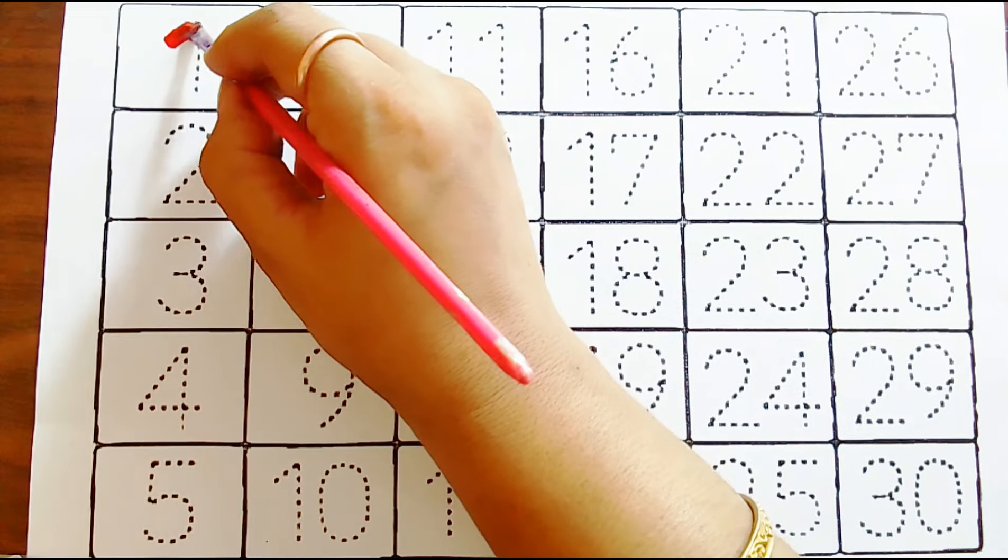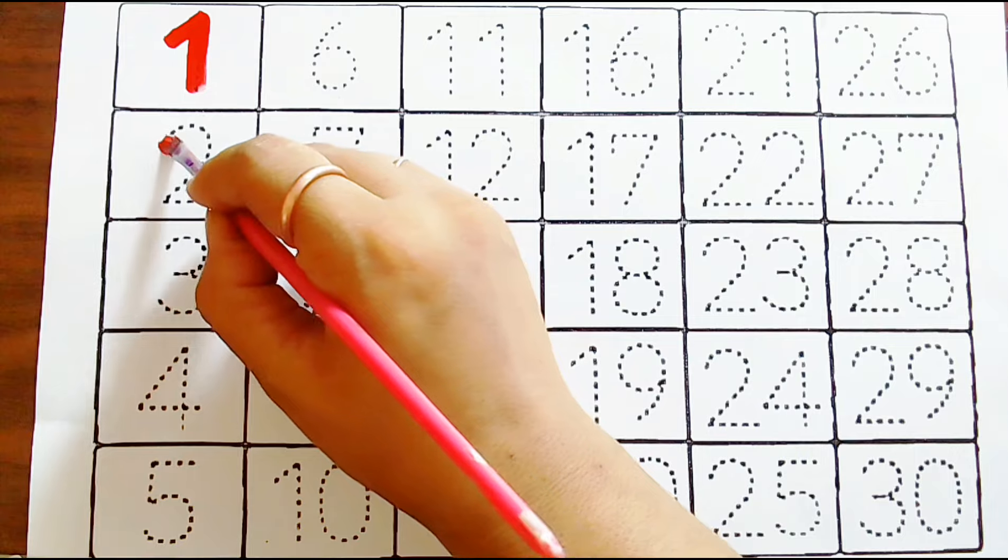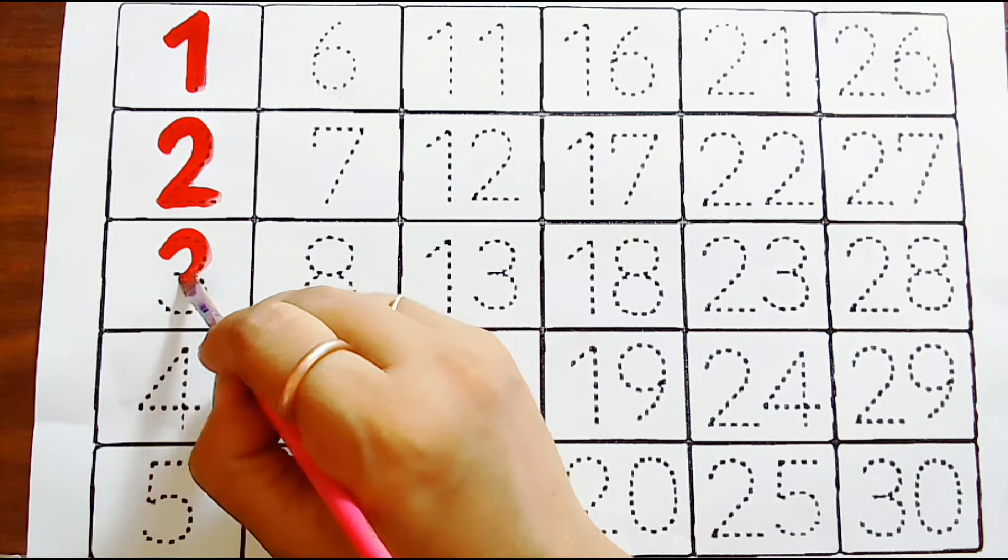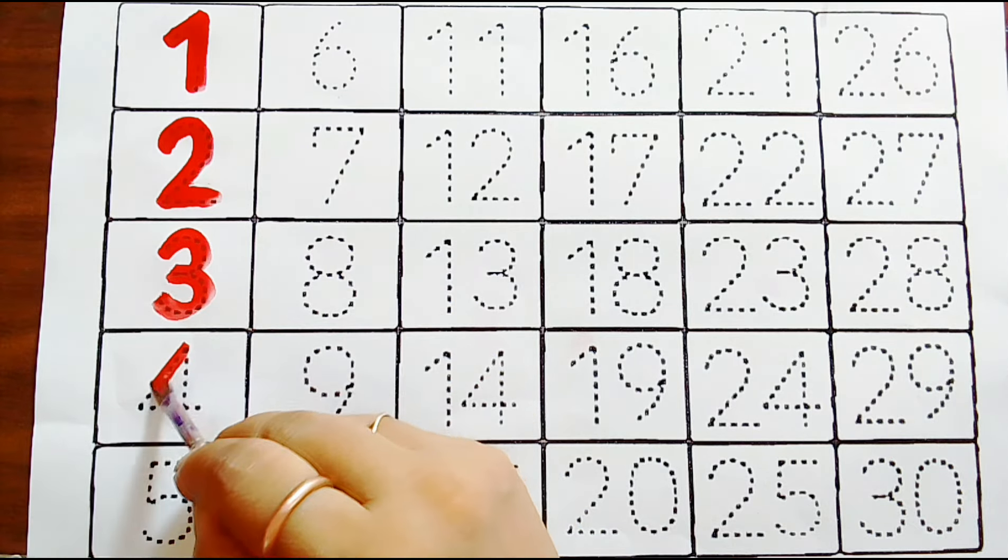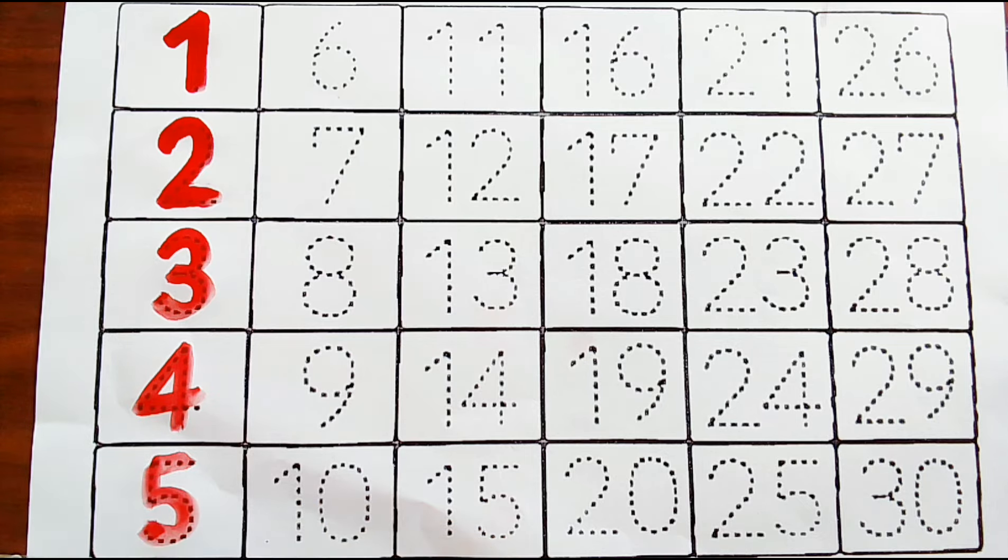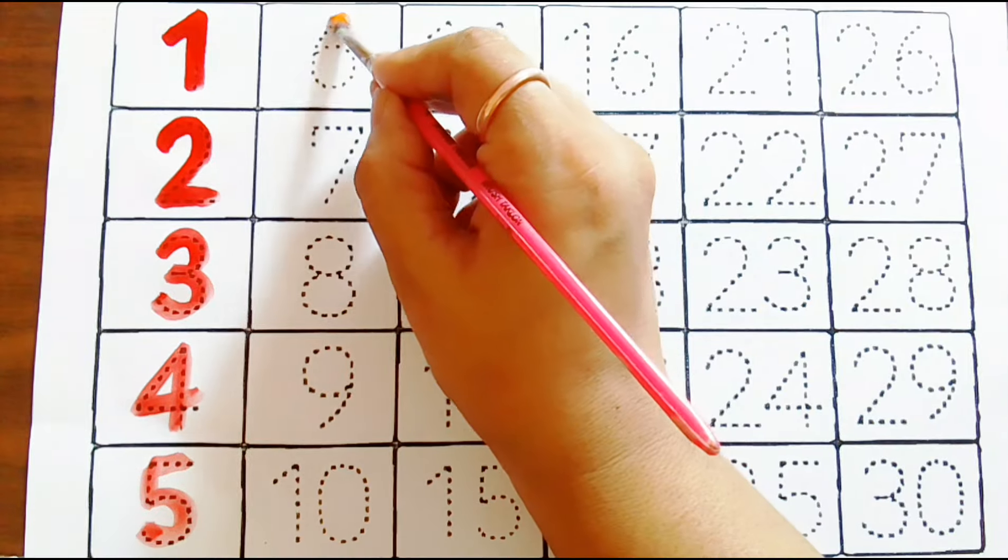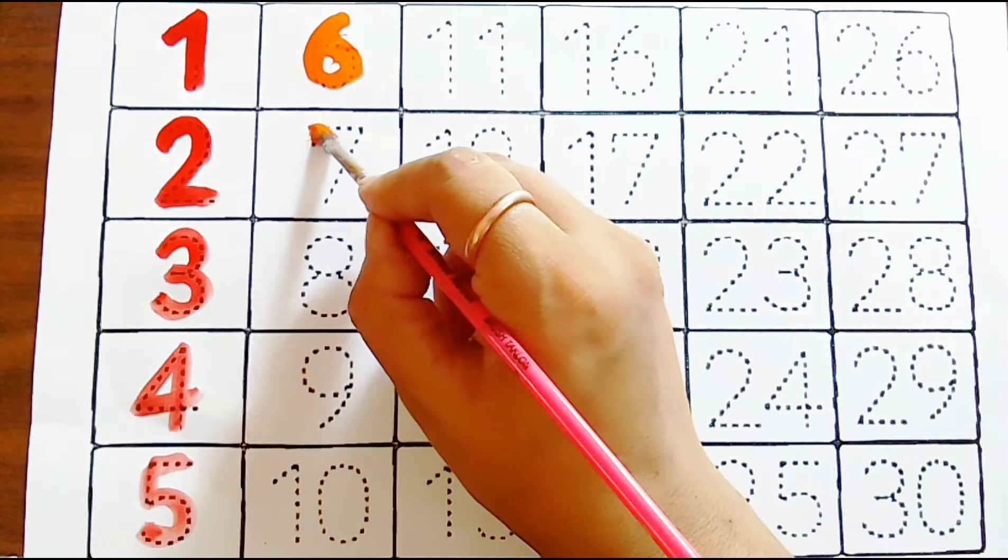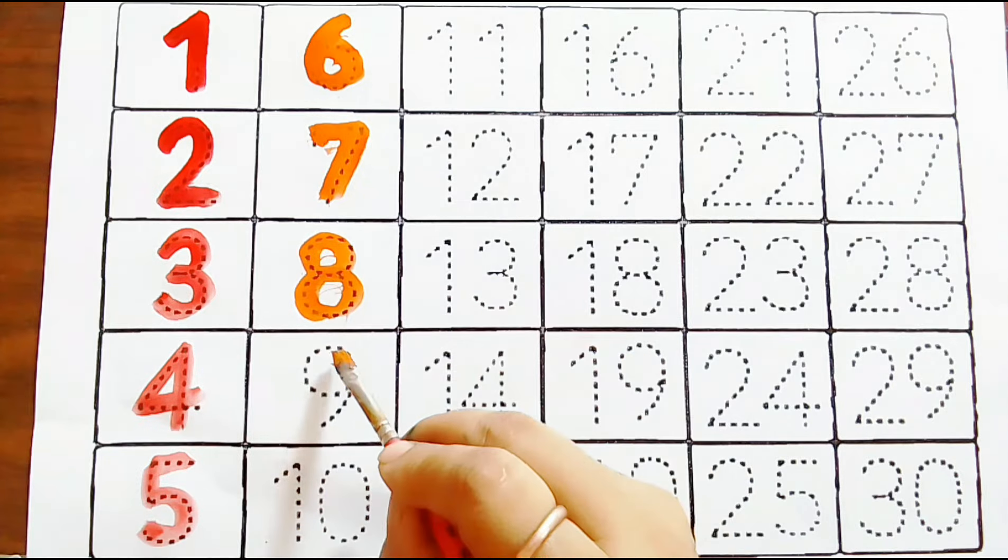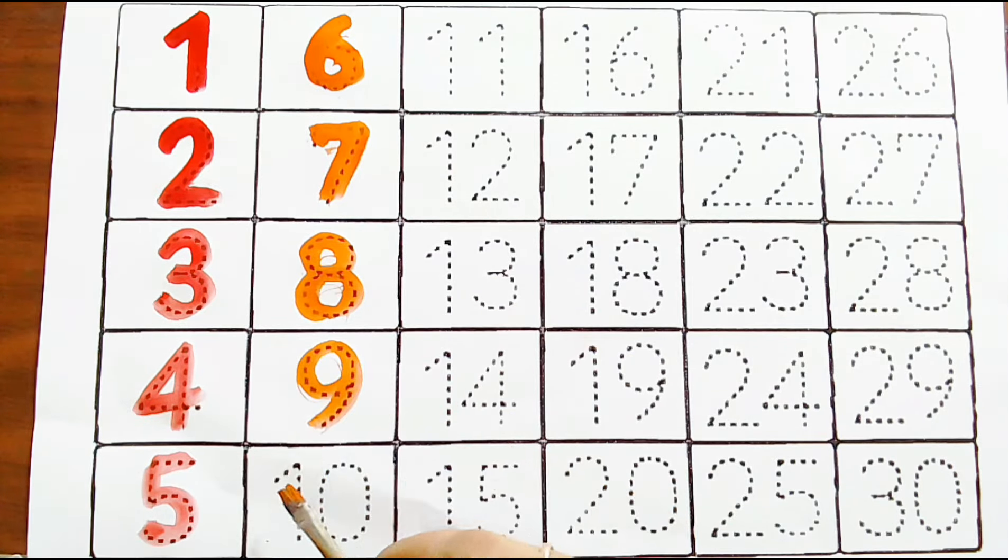Numbers. Red color: one, two, red color three, four, five. Orange color: six, seven, eight, nine. One, one zero, ten.